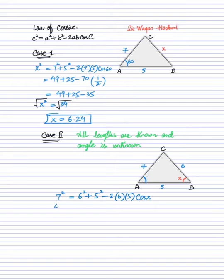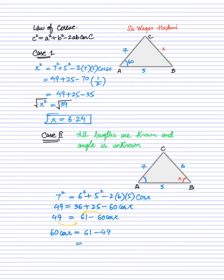So it will be 6 squared plus 5 squared minus 2 times 6 times 5 times cos X. Now we simplify: 7 squared is 49, 6 squared is 36, 5 squared is 25, and 2 times 6 times 5 is 60. So 49 equals 36 plus 25 minus 60 cos X, which gives 61 minus 60 cos X equals 49. I need to rearrange the equation a little bit.